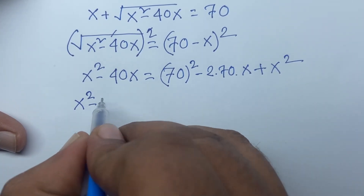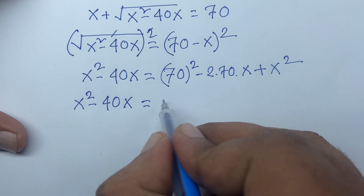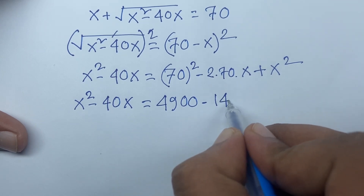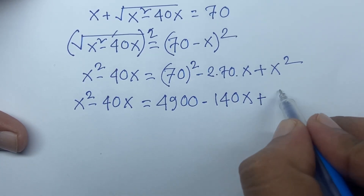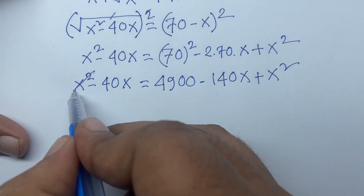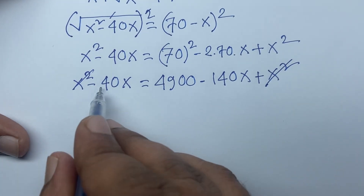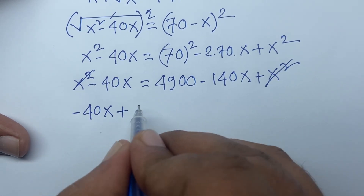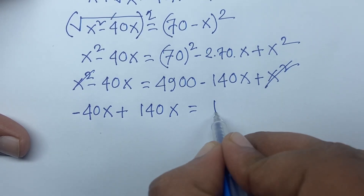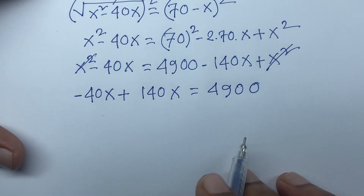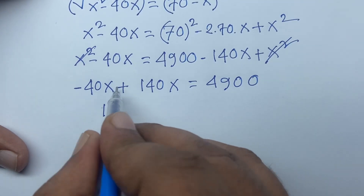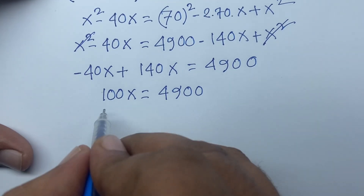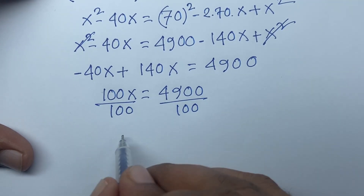So x squared minus 40x equals 4900 minus 140x plus x squared. The x squared terms cancel, and moving minus 40x to the right gives positive 140x minus 40x equals 4900, so 100x equals 4900.